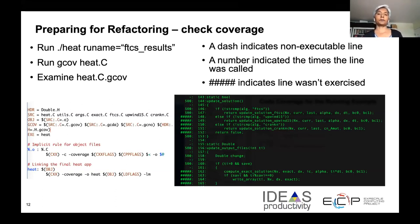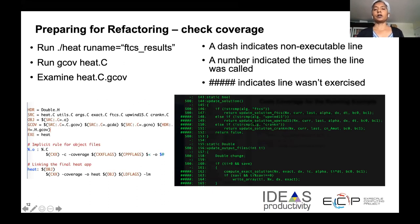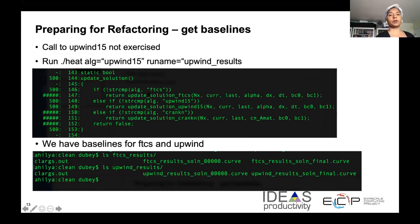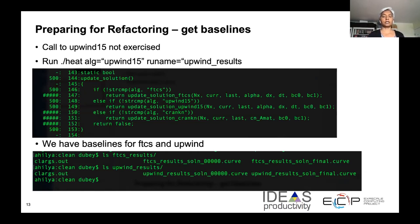We need to generate a new baseline. Fortunately we don't need a new test — just a new baseline for update solution upwind-15. Run the heat test with algorithm selected as upwind-15 and generate the baseline. Looking at code coverage again: now update solution FTCS was not exercised but update solution upwind-15 was. We now have baselines for both functions we want to provide a general interface for. With these two baselines in place, we are ready to proceed with the actual process of refactoring.